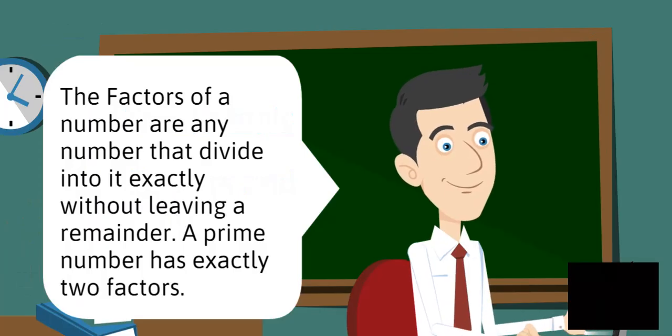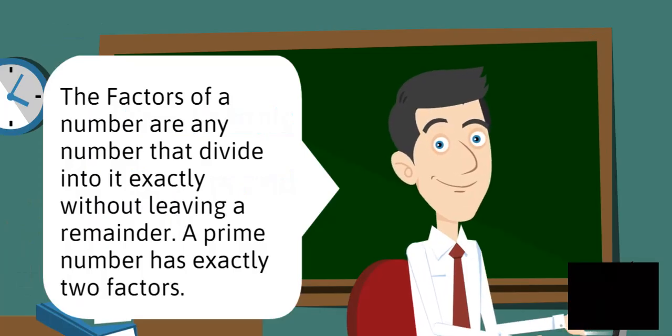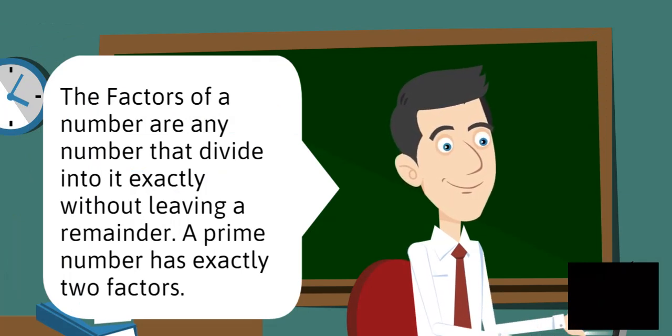The factors of a number are any number that divide into it exactly without leaving a remainder. A prime number has exactly two factors.